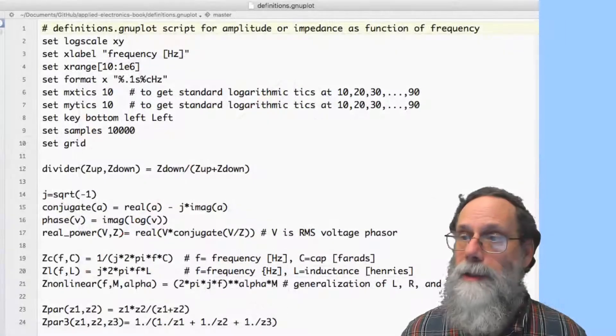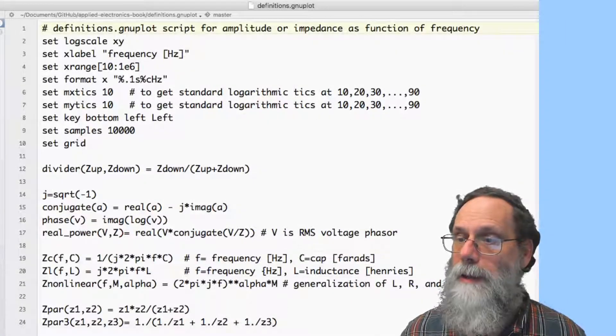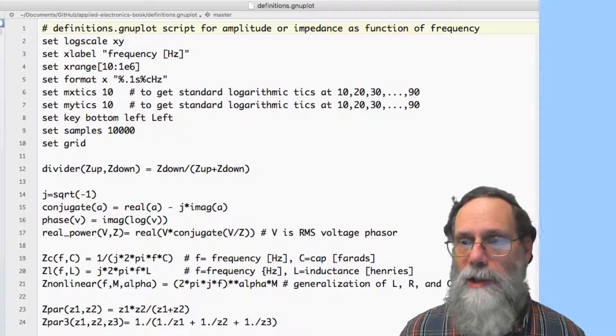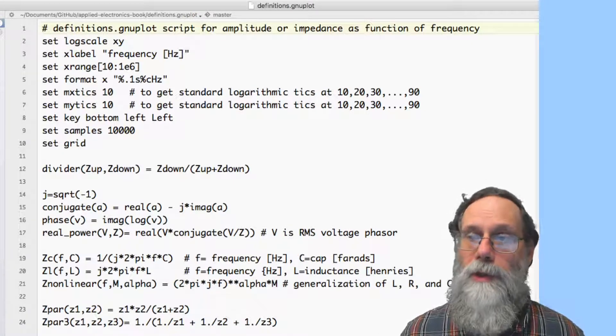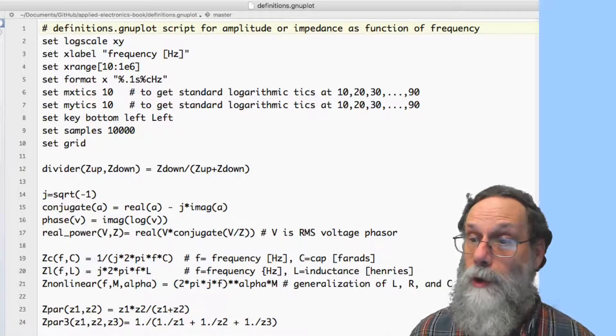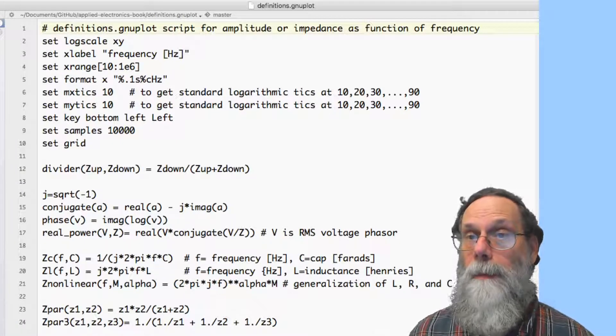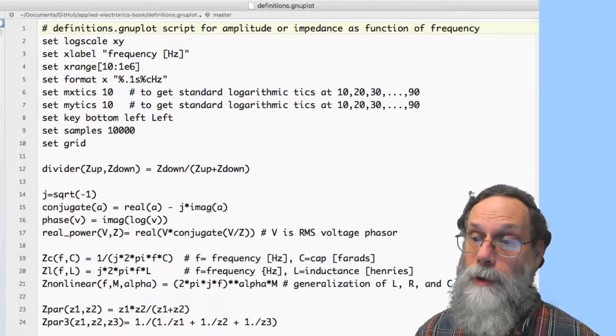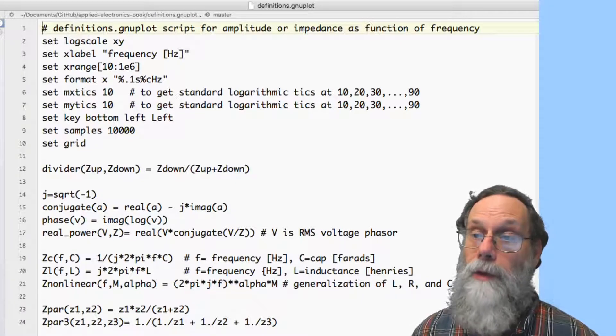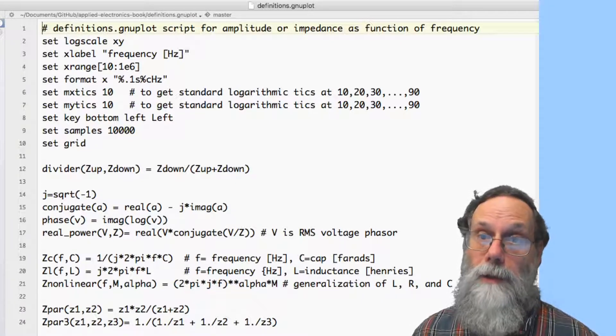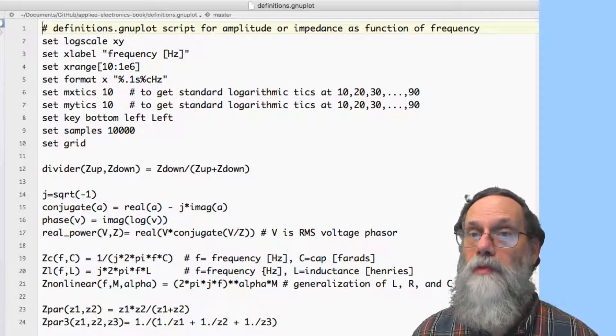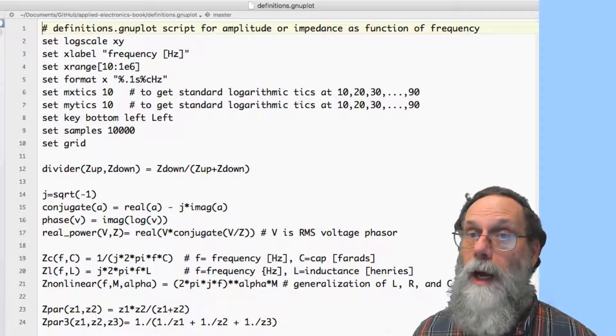Let's take a look at the definitions.gnuplot script, which I introduced in a much earlier section of the book. This provides the basic framework for producing Bode plots and for doing a lot of the modeling that we'll do. The first part here, lines 1 through 10, are setting up the plot.